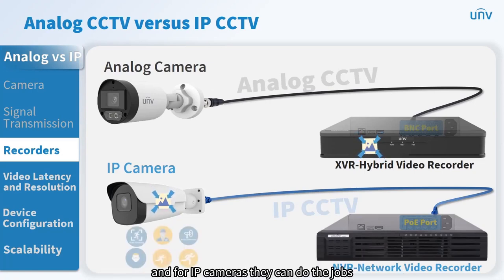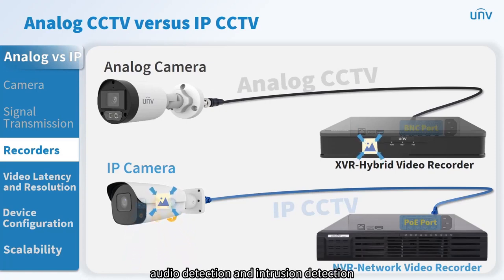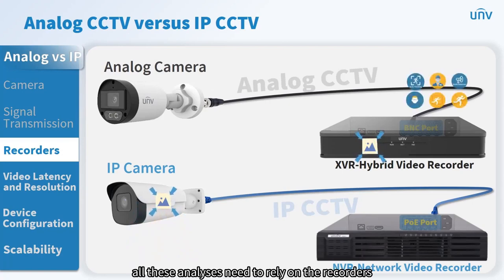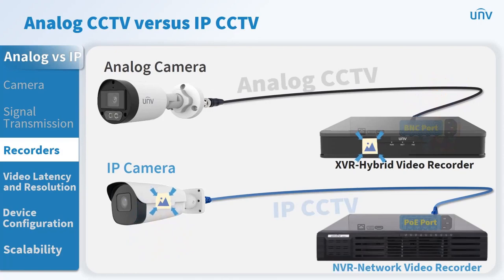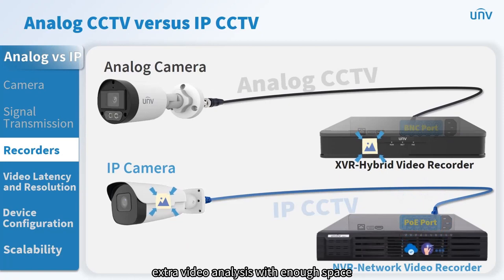IP cameras can perform smart functions like auto-tracking, audio detection, and intrusion detection on the camera itself. For analog systems, all these analyses need to rely on the recorders. IP surveillance system recorders can also perform extra video analysis with enough storage space.